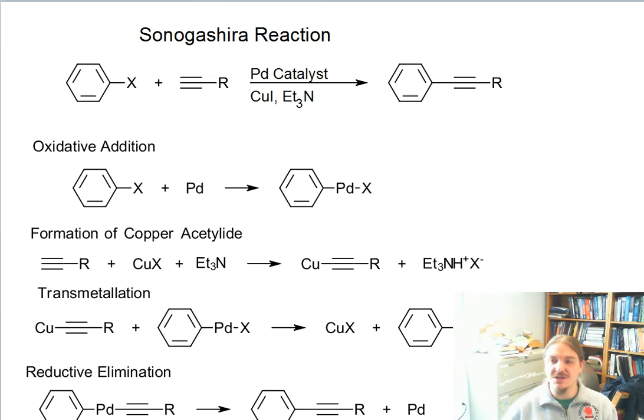The final example that I want to share with you is the Sonogashira reaction. The Sonogashira reaction is a reaction that starts with the terminal alkyne. It takes advantage of the acidity of the terminal alkyne. It adds a palladium catalyst, which can activate sp2 carbon-halogen bonds for different kinds of reactions.